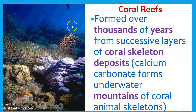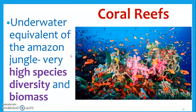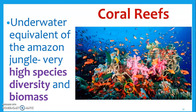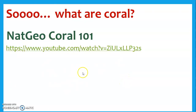Coral reefs form over thousands of years. High species diversity, high biomass — this is why they're very important to keep protected. Lots of baby fish will basically go through their maturation process around coral reefs. So if we want to keep eating big fish, we want the little ones to have a safe area to actually grow up in and survive.